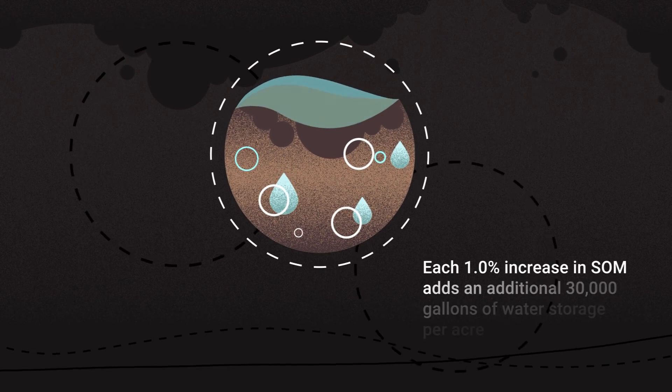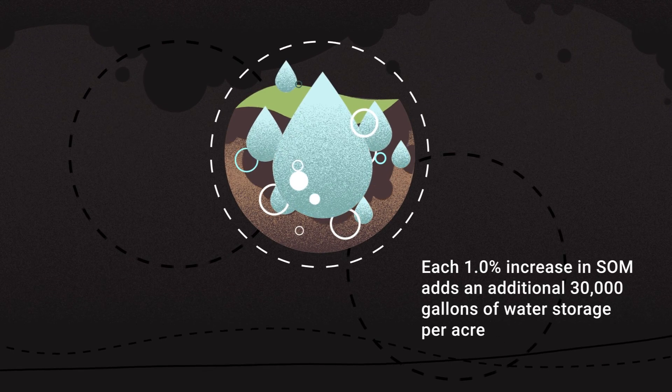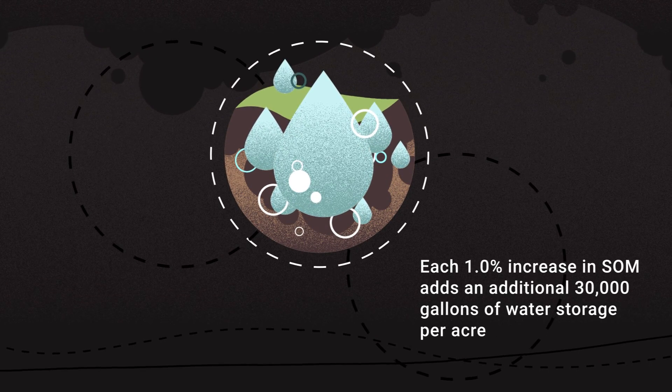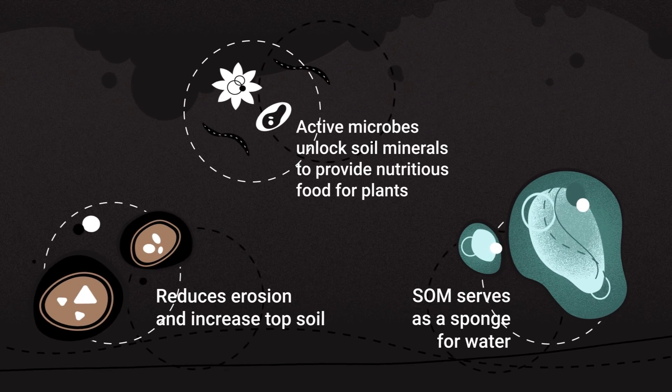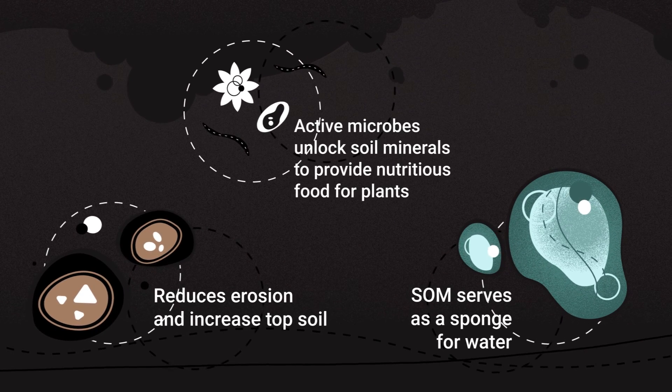In a healthy functioning soil, armies of active microbes convert soil minerals into essential nutrients for healthy plants. The carbon-rich soil organic matter serves as a sponge for water,